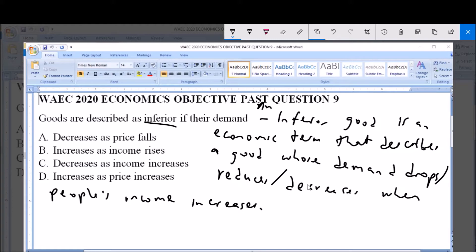Now, if the demand of a good decreases when people's income is increasing, then that good is said to be inferior. This is because it's an indication that there is superior competition